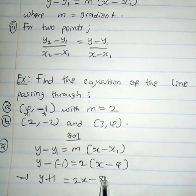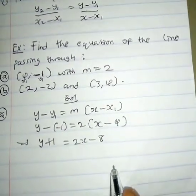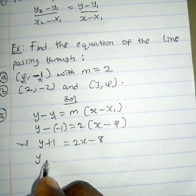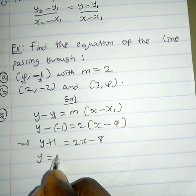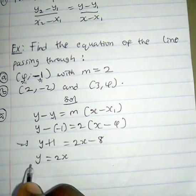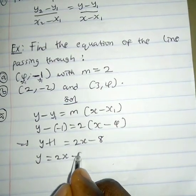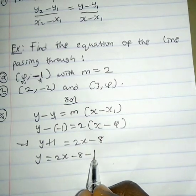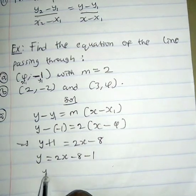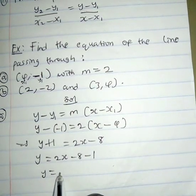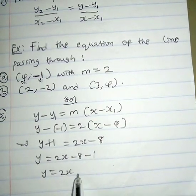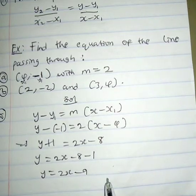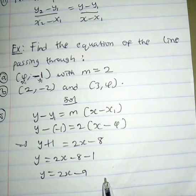So we have y equals 2x minus 8, and when the 1 comes to the right side it becomes minus 9, giving us y equals 2x minus 9. So the equation of the straight line required is simply y equals 2x minus 9.